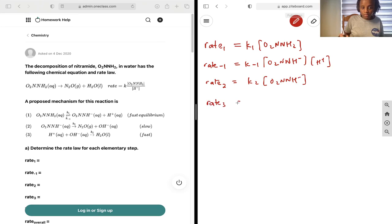And lastly rate 3 is going to be equal to k3 into H plus, and these are our individual rate laws.